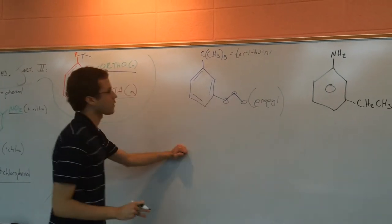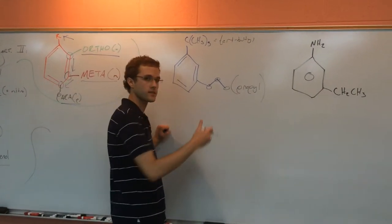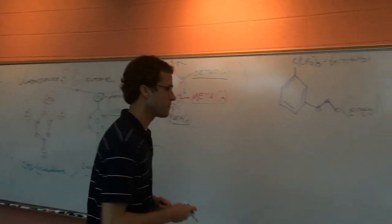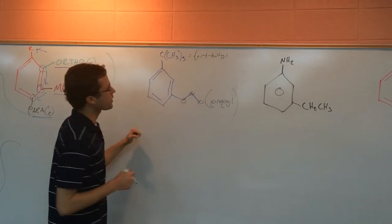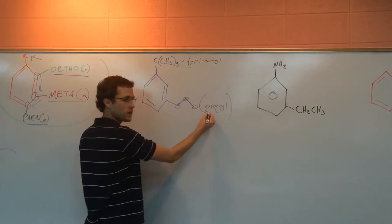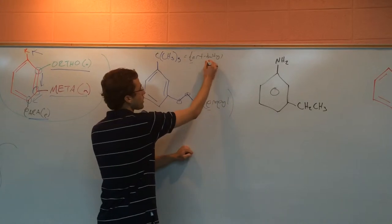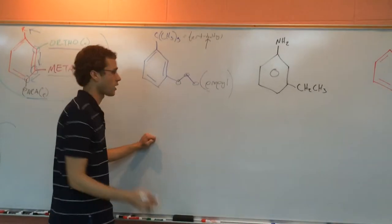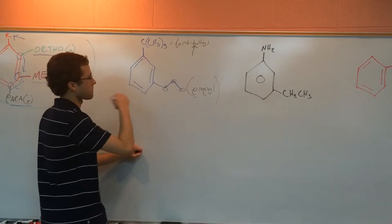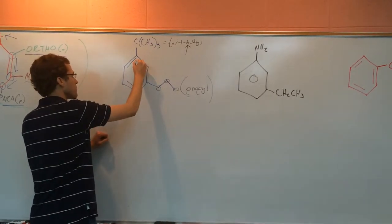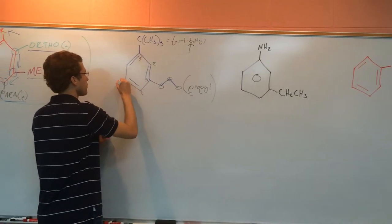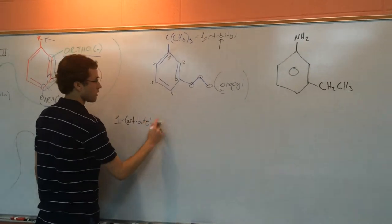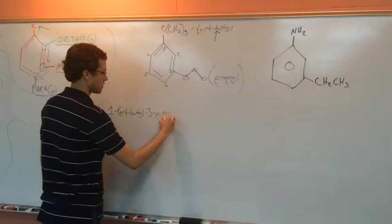We don't have anything else attached, so this one is going to end in 'benzene' — no CH3, no NH2 for aniline, no OH for phenol, no carboxylic acid. The t-butyl group starts with T and the propyl group starts with P. But when alphabetizing, you look at 'butyl' not 'tert', so butyl gets alphabetical priority because B comes before P. So t-butyl becomes carbon one: one, two, three, four, five, six. This is going to be 1-tert-butyl-3-propylbenzene.